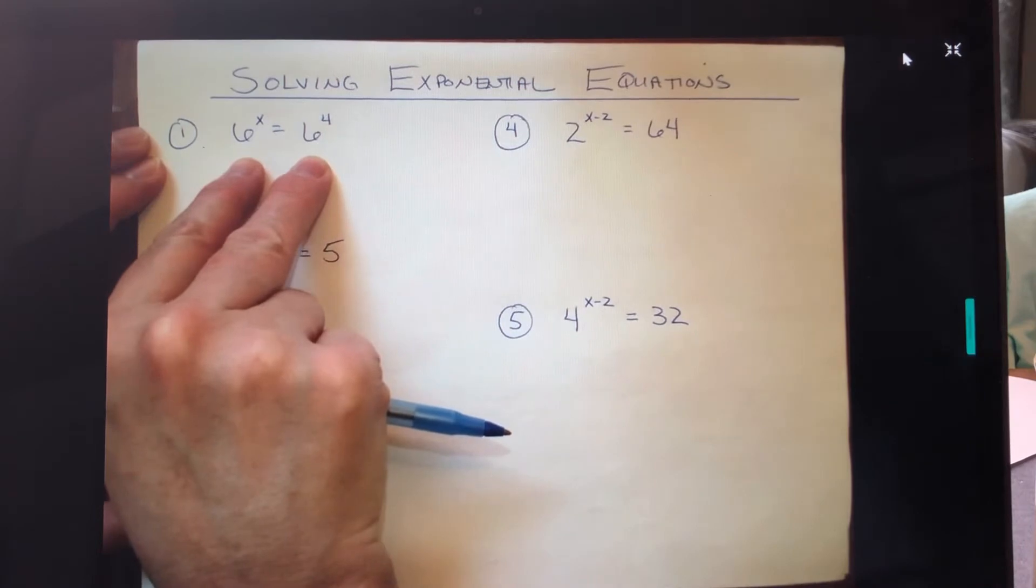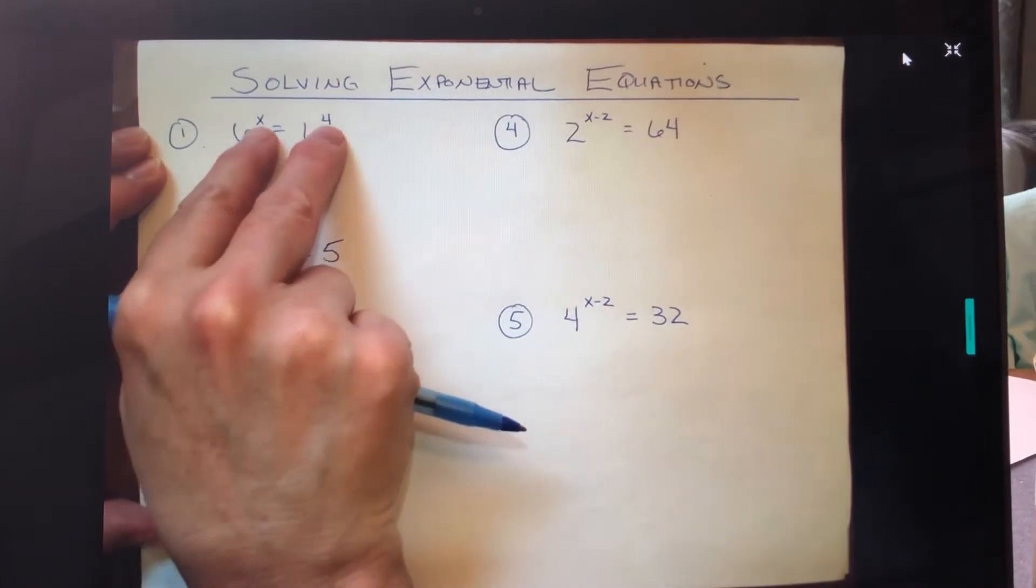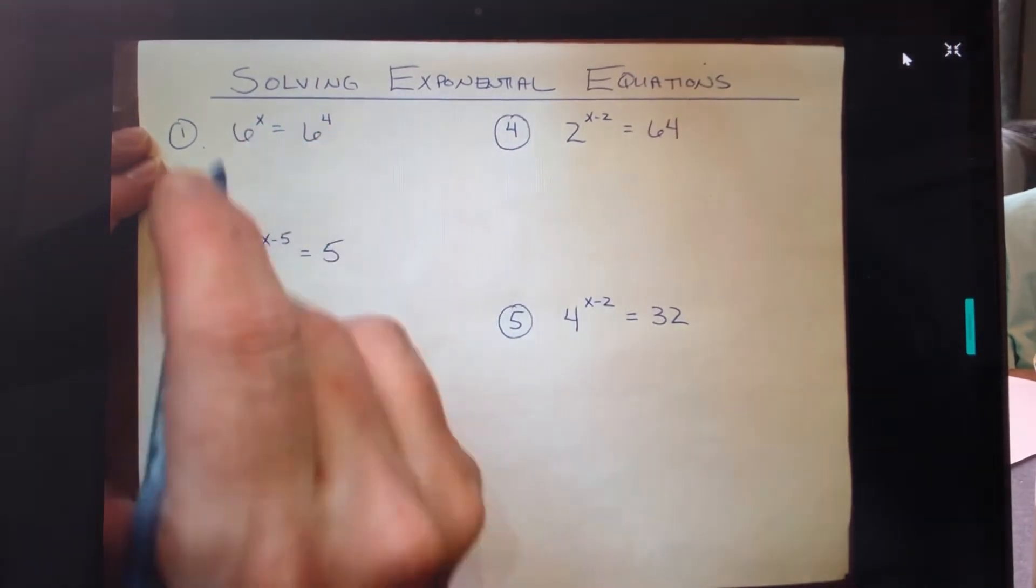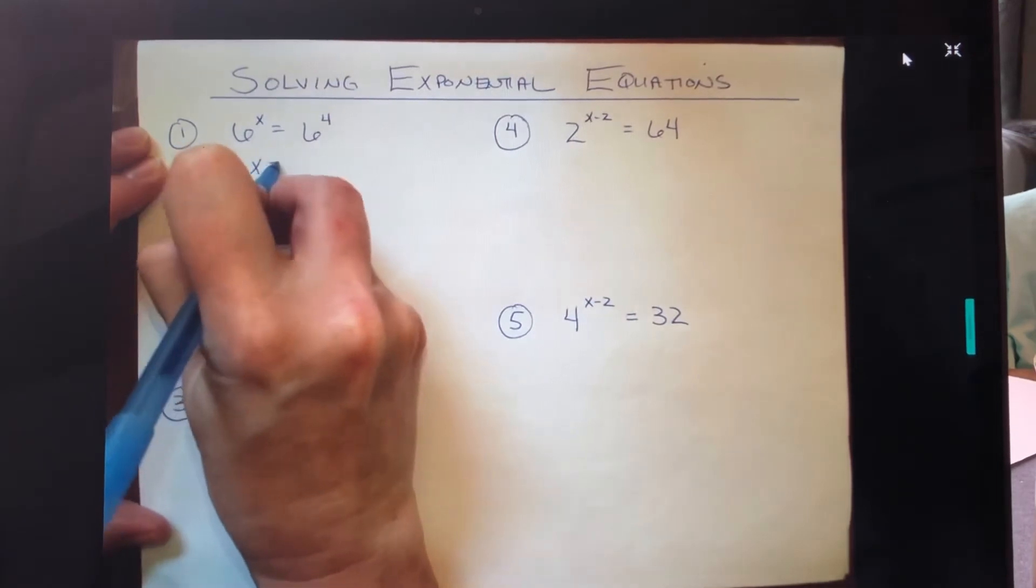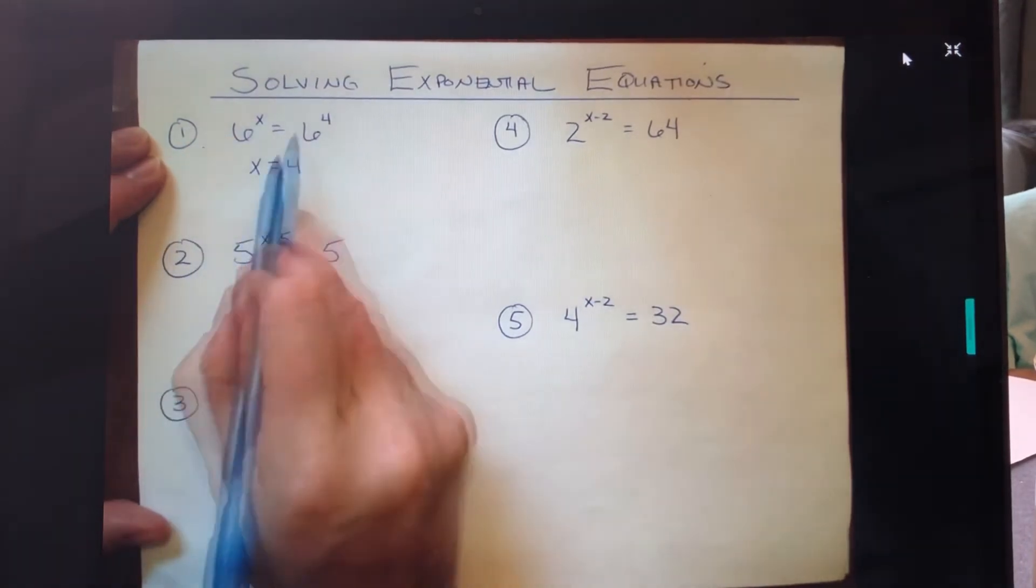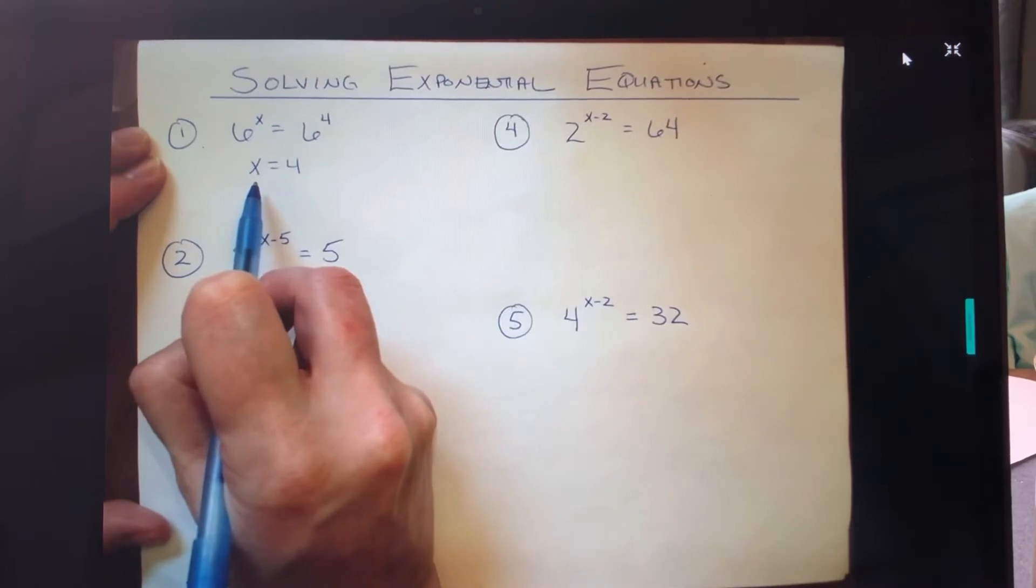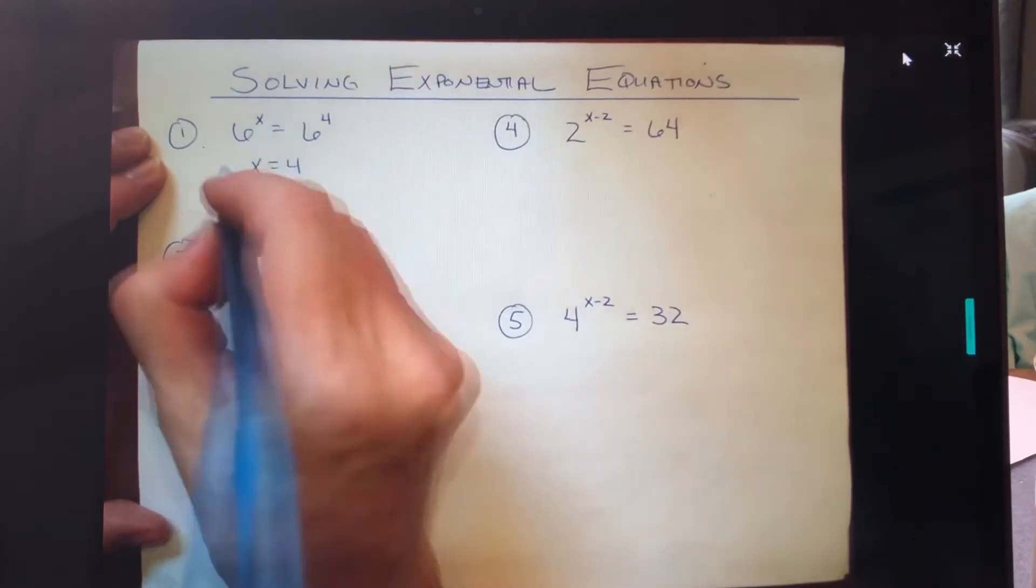Okay, this first problem is pretty straightforward. We can readily see right away that the bases match. That allows me very quickly to grab these exponents, just pull them down, and set them equal to each other. Once you do that, you want to isolate the x. It's already isolated, so we're actually done.